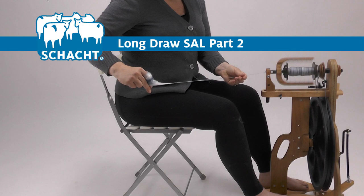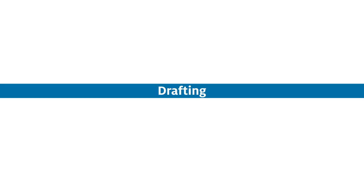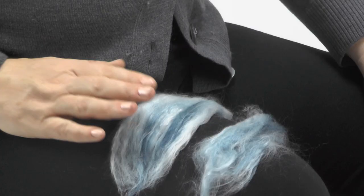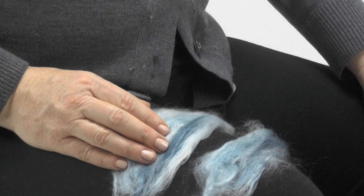Long draw is perfect for a low twist or lofty yarn spun from short to medium length fibers. Since we're spinning top and spinning it from the fold, we tore the braid into staple lengths.